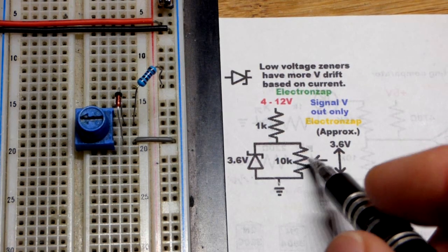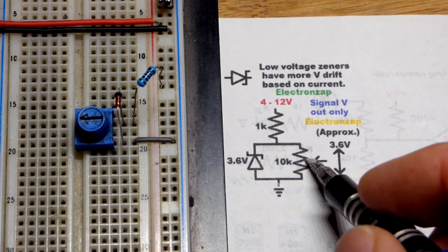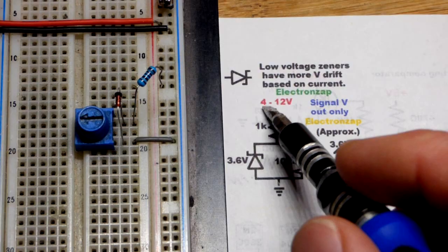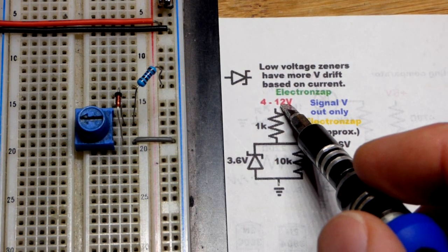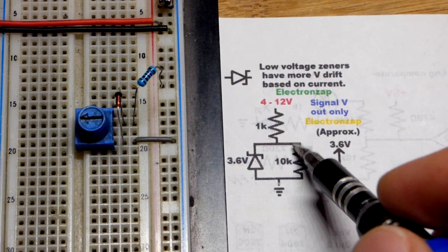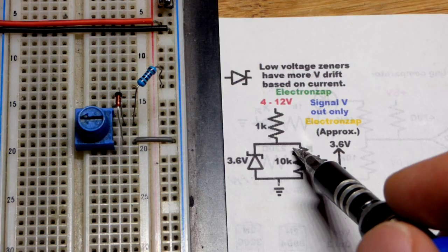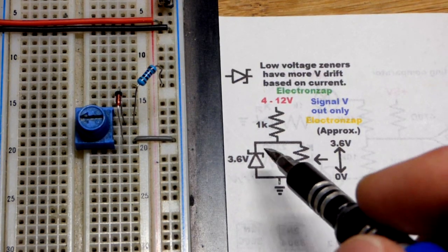So now in this video, we have a trim pot. Parallel to the trim pot is a Zener diode. Ultimately, what that does is, no matter what the supply voltage is, for the most part, you have a fixed voltage across the trim pot, which will be the Zener voltage of the Zener diode right there.